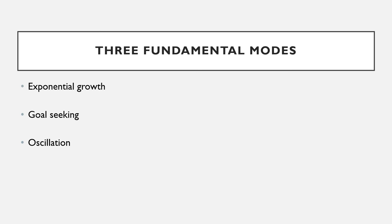In conclusion, the feedback structure of a system generates its behavior. Most dynamics observed in the real world are examples of a small set of basic patterns or modes of behavior. Three of these modes are fundamental: exponential growth, goal-seeking, and oscillation.